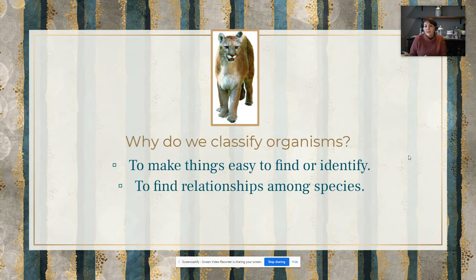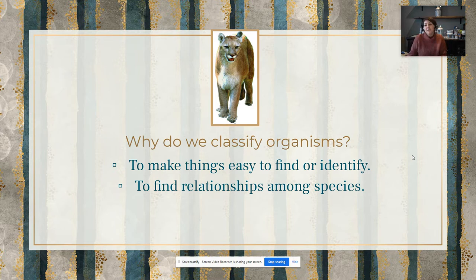So why do we classify organisms? Why are there scientists who spend time with this? It's simply to make things easier to find or identify, and also to help us draw relationships among species. If you're thinking about the Netflix example, it would be really hard to find a movie you might like if there was no grouping or classification — and that's the same for organisms.